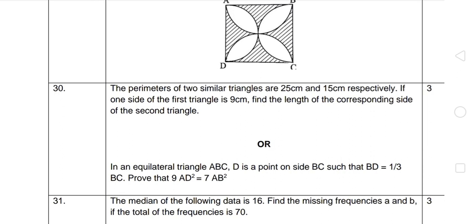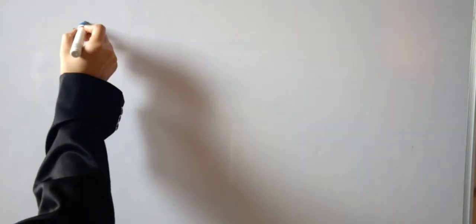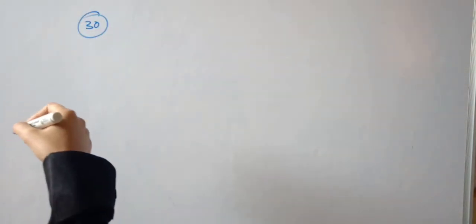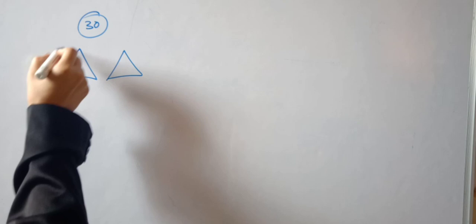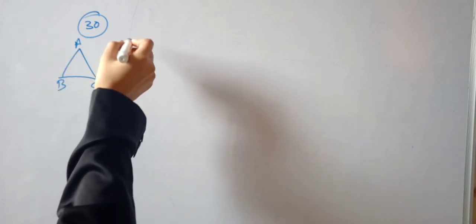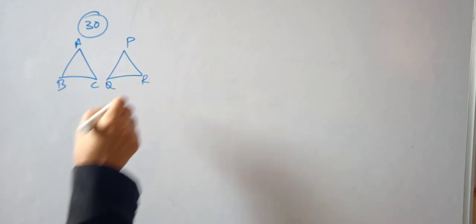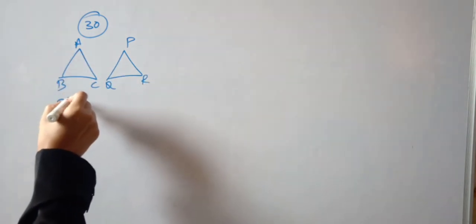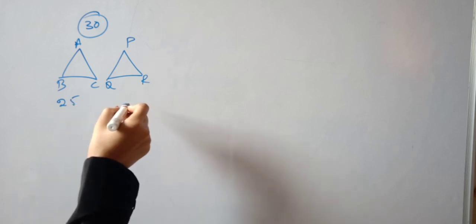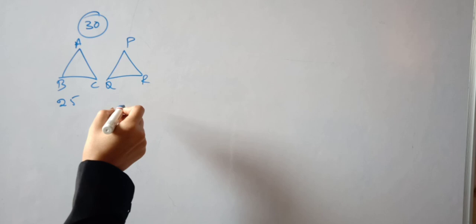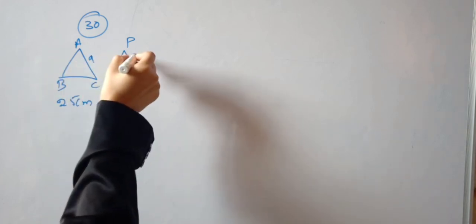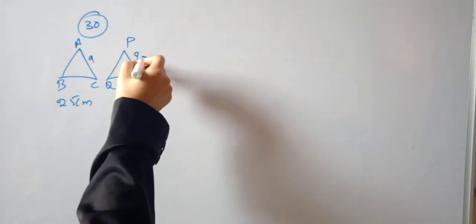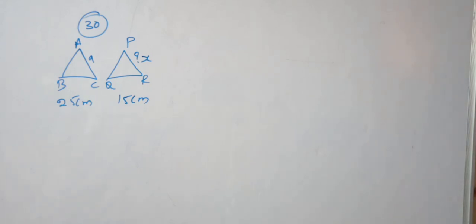Let's start the solution for question number 30. Two similar triangles means corresponding sides are similar. So here we have two triangles: let the first triangle be ABC and the second triangle PQR. First triangle ABC has a perimeter of 25 cm, and triangle PQR has a perimeter of 15 cm. We need to find the corresponding side length. The first example: AC is 9 cm, and the corresponding side is PR, so PR needs to be found out.